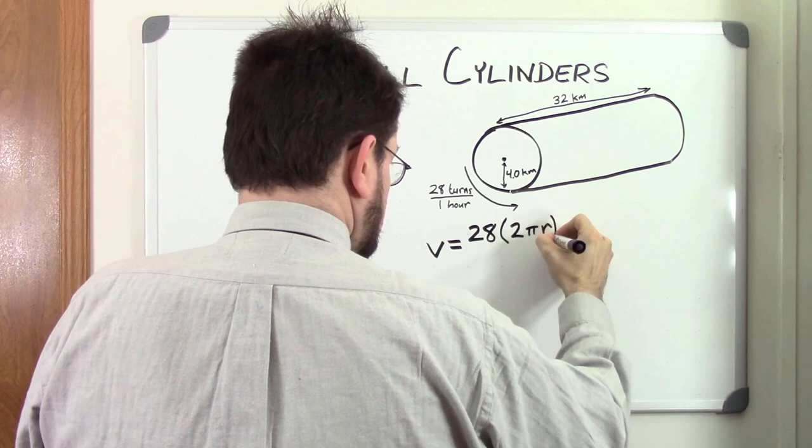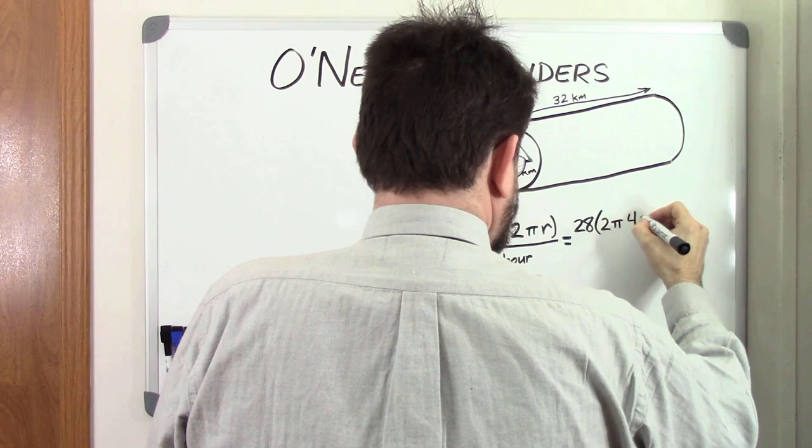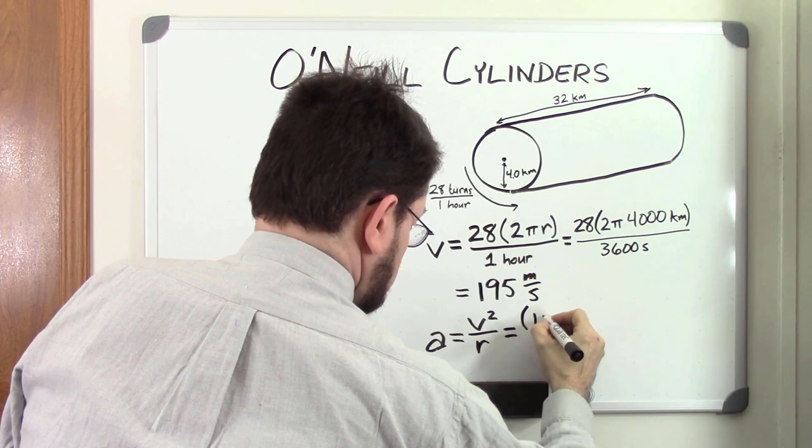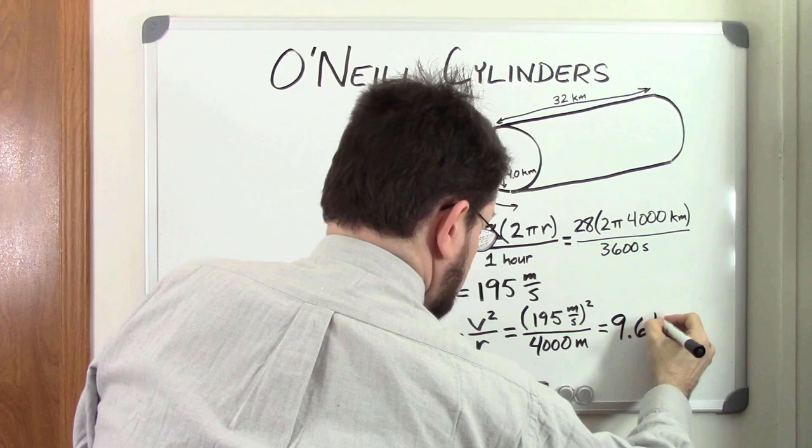The rotation of the cylinder would need to be fast enough to create enough centrifugal force to simulate gravity, but not so fast that it caused motion sickness. In order to achieve this balance, the station would have to be very large. O'Neill's original proposal was for a cylinder 5 miles in diameter and 20 miles long, rotating about once every two minutes.